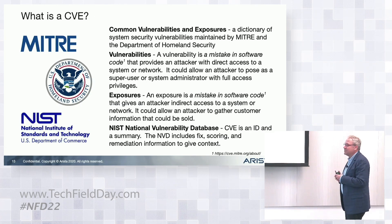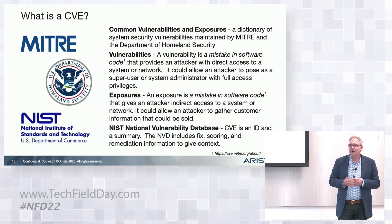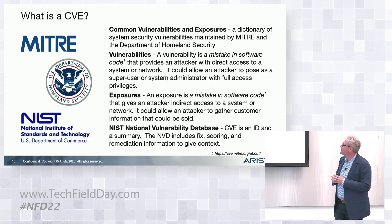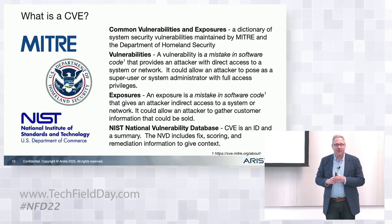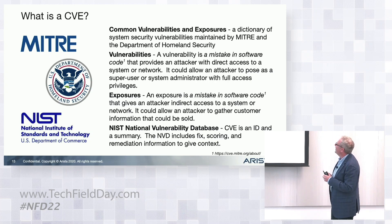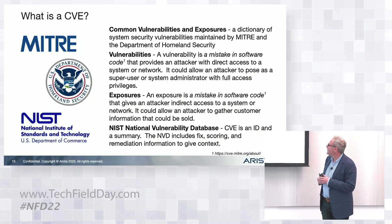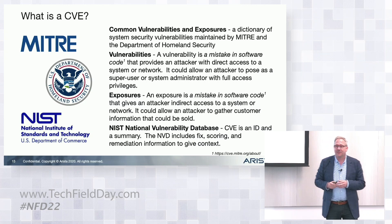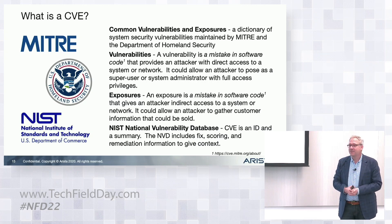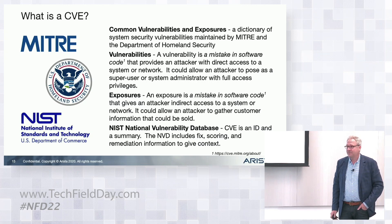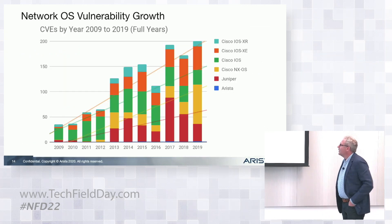The government has classified these as vulnerabilities or exploits — slightly different, but there's a commonality. A vulnerability is a mistaken software code that provides an attacker with access to a system. An exposure is a mistaken software code that gives an attacker indirect access to a system or network. These are defects, these are bugs — sometimes we wrote them, sometimes they came in from the software bill of materials we used — and we are responsible for them regardless. And there have been a lot of them.